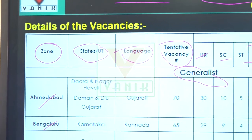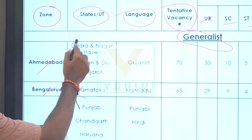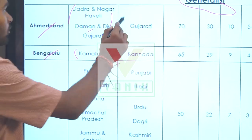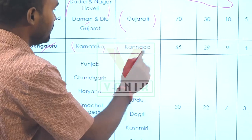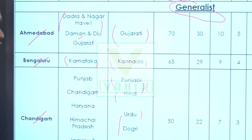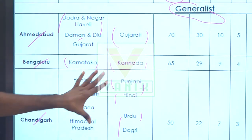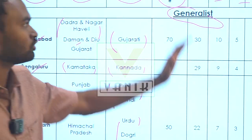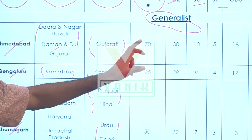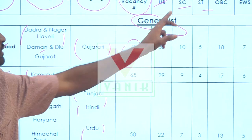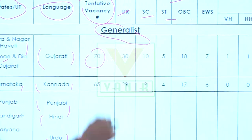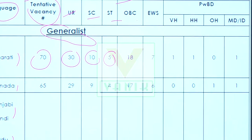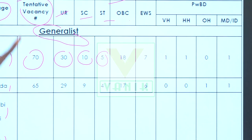We have zones such as Ahmedabad, Bangalore, Chandigarh, etc., which cover union territories, and each zone has its corresponding language. The total vacancy is listed with tentative numbers including URP around 30, DARS, HTSC categories, etc.